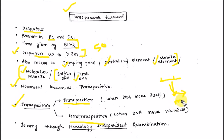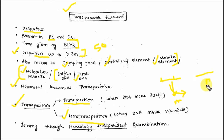In retrotransposition, when the DNA jumps from one position and joins to another position, this joining of a particular transposable element is basically homology-independent recombination. That means it does not require any particular homology sequence to join to another position.